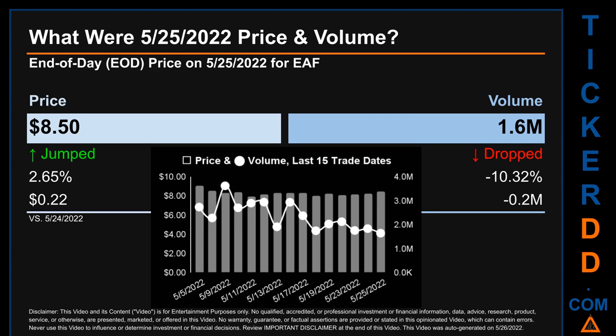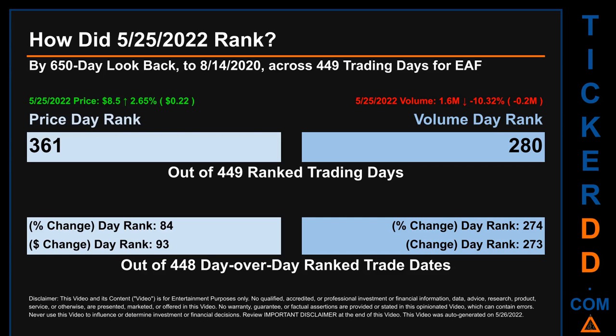The graph shows price and volume for the last 15 trade dates across a range of one dollar and 18 cents. The max and minimum end-of-day prices were respectively $9.10 and $7.92. Volume saw a range of 2 million, dropping to 1.6 million and jumping to 3.6 million.